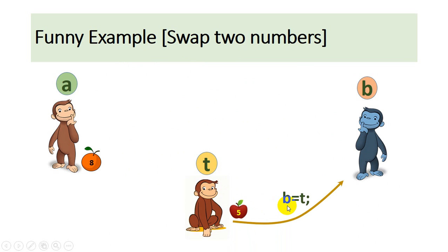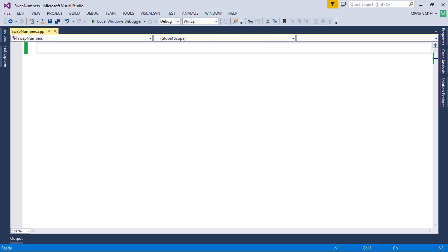Where this b will take apple from temporary variable from this t. Now finally both are exchanged. Now this we are going to learn programmatically. I hope it's very easy and straightforward and I hope you like this example. Now let's see the program.